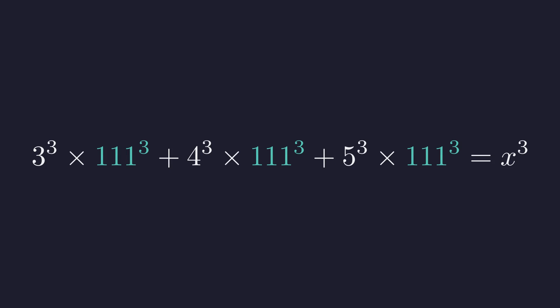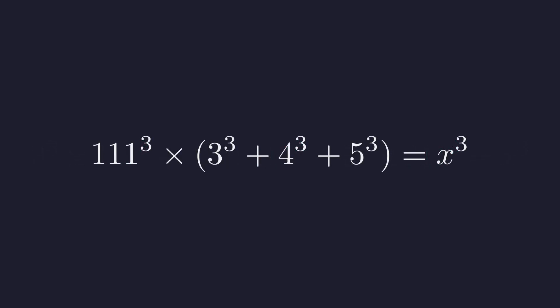This is exactly the kind of common factor we can pull out using basic algebra. So we can factor out 111 cubed, leaving us with 111 cubed times the quantity 3 cubed plus 4 cubed plus 5 cubed. The whole problem now boils down to figuring out what's in these parentheses.